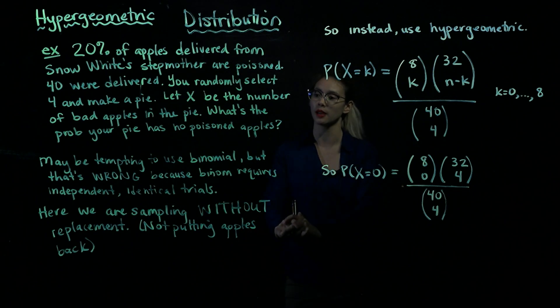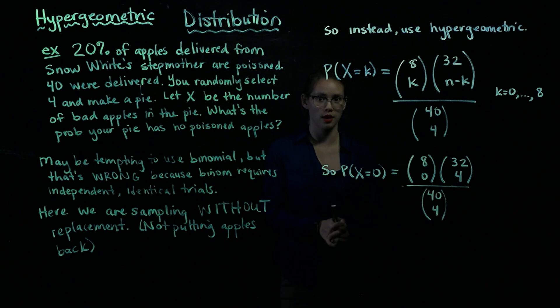Okay, so it may be tempting to use the binomial here, but that would actually be wrong. Let's think about why. So for a binomial, we have independent identical trials.